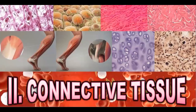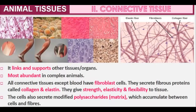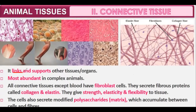Connective tissue is the type of tissue that connects the organs of the body — it links and supports other tissues and organs. It is the most abundant tissue in complex animals. All connective tissue except blood has fibroblast cells. Blood is also a kind of connective tissue; others include cartilage, bone, areolar tissue, and adipose tissue.